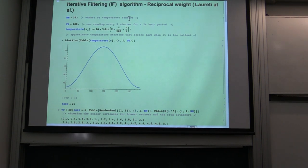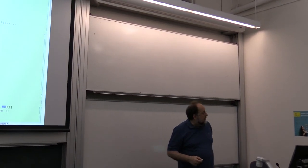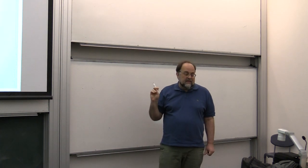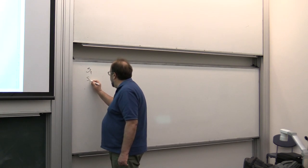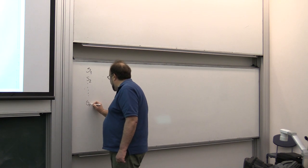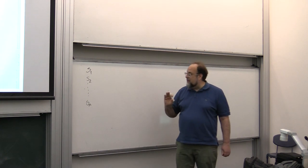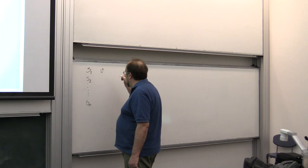Let us briefly review what we did last class. If you have N sensors — say N voltmeters measuring a certain voltage — with sensors S1, S2, up to Sn, and you have tested them in a lab using some super precise reference voltmeter, you can obtain their variances.